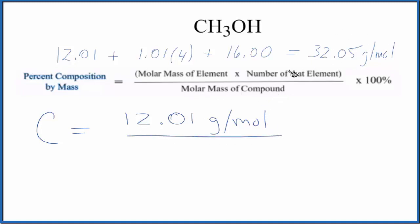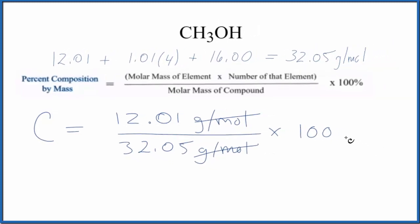Multiply by a hundred to get a percent. Note that grams per mole, it's on the top and the bottom, it cancels out so we end up with 37.47%.